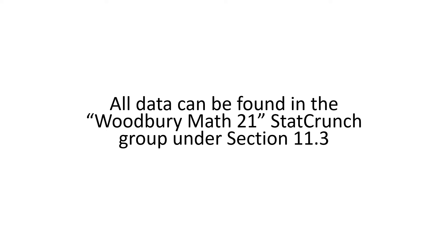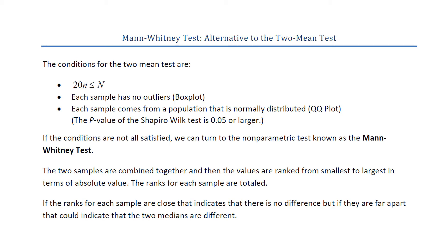Quick reminder: all the data in this video can be found in the Woodbury Math 21 StatCrunch group under Section 11.3. The conditions for the two-mean tests are that each sample has to be no more than 5% of its respective population size, which we check by multiplying the sample size by 20 and determining whether the population size is larger than that.